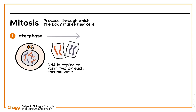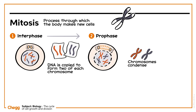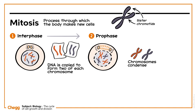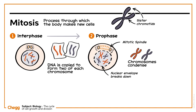Mitosis begins with prophase. The chromosomes condense into more visible X-shaped structures, each consisting of two sister chromatids with identical genetic information. The nuclear envelope breaks down, and the mitotic spindle, a structure that contains microtubules and some other proteins, extends across the cell.